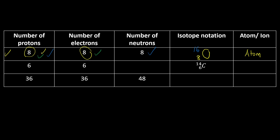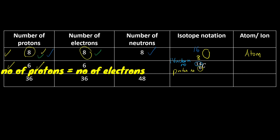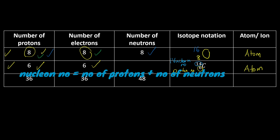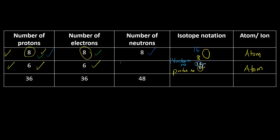The proton number is 6, which gives us the number of protons. For this element, the number of protons equals the number of electrons, so it is an atom. To calculate the number of neutrons, remember that nucleon number equals the sum of protons and neutrons. So we use nucleon number 14 minus the total number of protons 6, which gives us 8 neutrons.